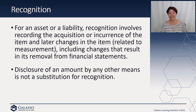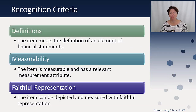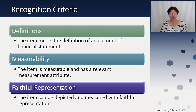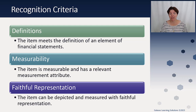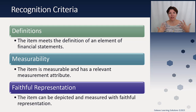Disclosure of an amount by another means is not a substitution for recognition. When you meet the recognition criteria, it actually gets included in the financial statements. An item and its financial statement information must meet three criteria in order to be recognized, subject to cost-benefit and materiality considerations. The first is definitions — the line item has to meet the definition of an element: revenue, expense, gain, loss, asset, liability. The second is measurability — the item is measurable and has a relevant measurement attribute, so we have a number we can put with it. The third criteria is faithful representation — the item can be depicted and measured with faithful representation, something we are able to rely on.